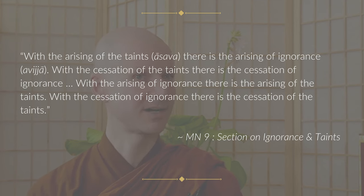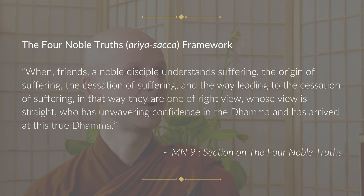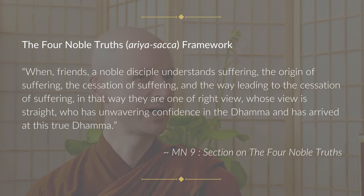Sariputta then goes on to define the Four Noble Truths, after which he describes dependent origination — each factor, their cause, cessation, and the path leading to the cessation — all the way back to the first cause of ignorance, asking what ignorance is caused by. It is caused by the taints, the asavas, which in turn are caused by ignorance. What's fascinating is he's showing the relationship between the Four Noble Truths framework and dependent origination, Paticca Samuppada — a constellation of the two most centrally important doctrinal frameworks in the canon.